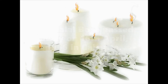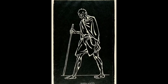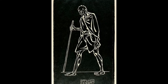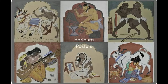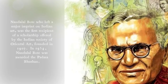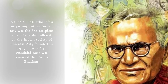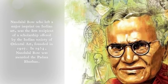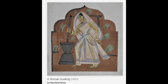Today, the National Gallery of Modern Art in Delhi holds 7,000 of his works in its collection, including a 1930 black and white linocut of the Dandi March depicting Mahatma Gandhi, and a set of seven posters he later made at the request of Mahatma Gandhi for the 1938 Haripura session of the Indian National Congress. Nandalal Bose, who left a major imprint on Indian art, was the first recipient of a scholarship offered by the Indian Society of Oriental Art, founded in 1907. In 1954, Nandalal Bose was awarded the Padma Bhushan.